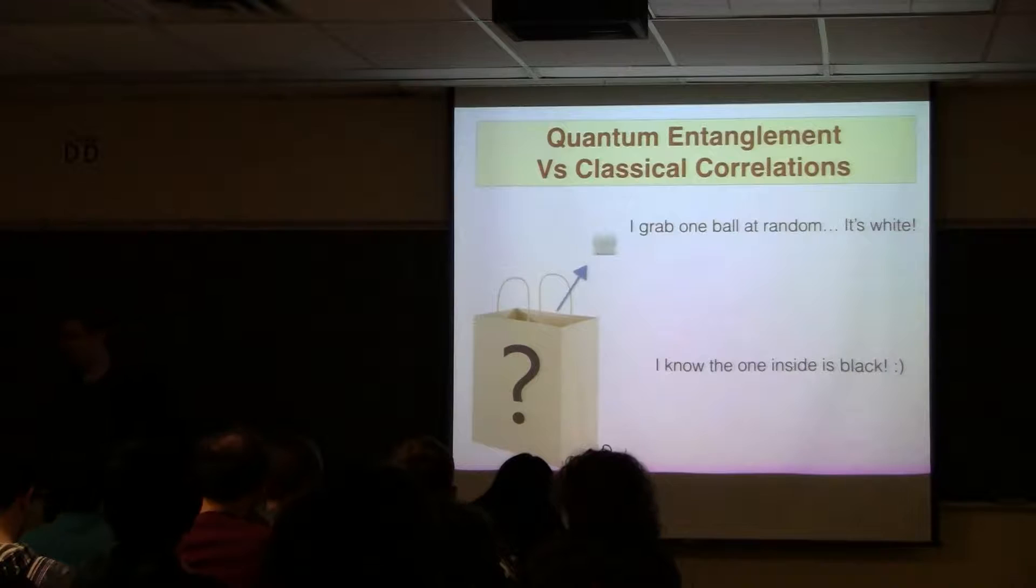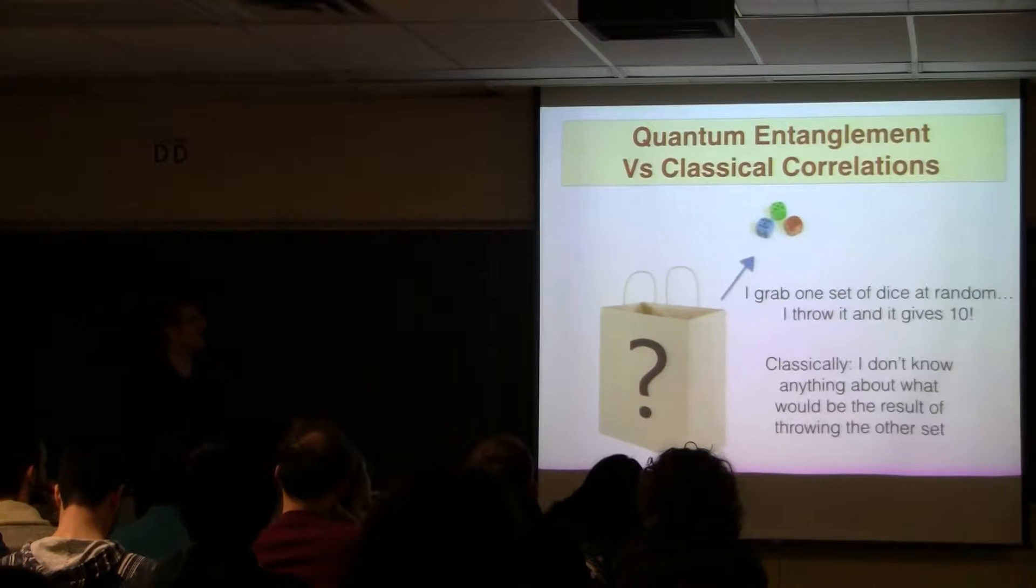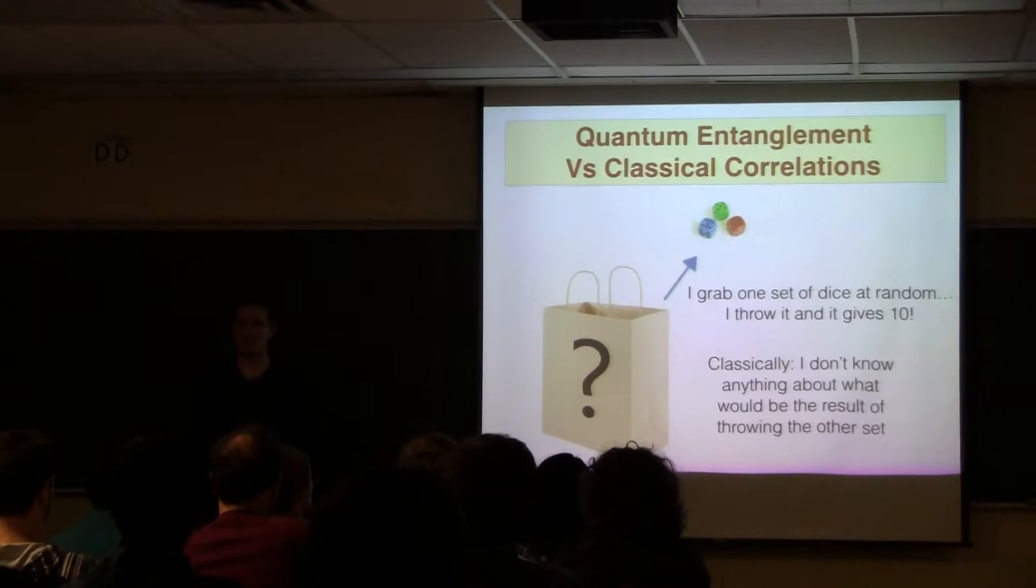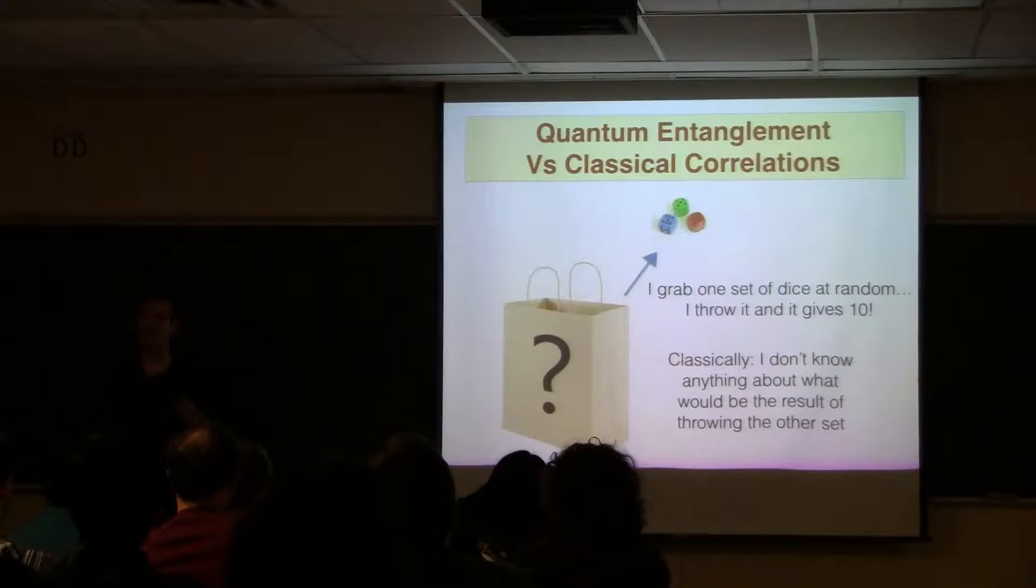So quantum entanglement is a little bit like follows. Imagine two sets of quantum dice, like two quantum random number generators that are entangled. I put them in the bag, and then I pick one set at random, and I leave the other one in the bag. You take the bag wherever you want, and then I throw my set and I got a 10. And then I tell you, you're going to get a 10 when you throw yours. And then you grab it and throw it. It's a 10. You go, lucky. Let's repeat it. Now you're going to get an 8, and you get an 8. That kind of correlations does not exist in classical theory.